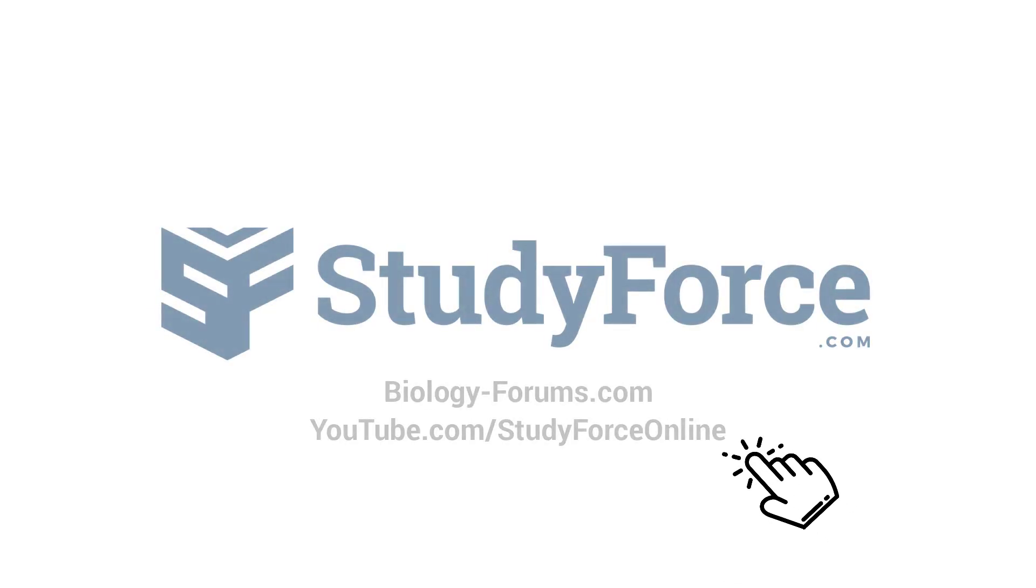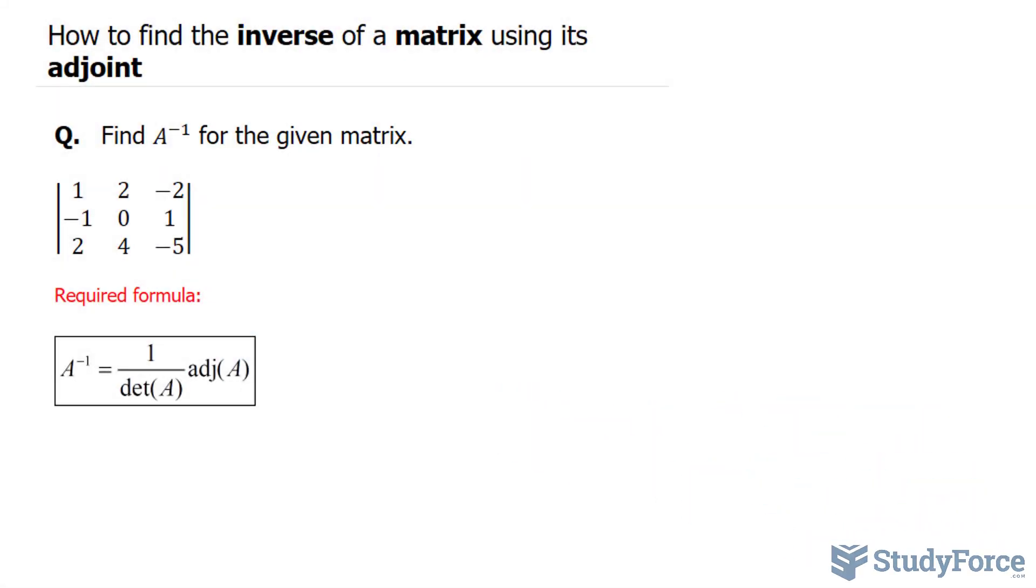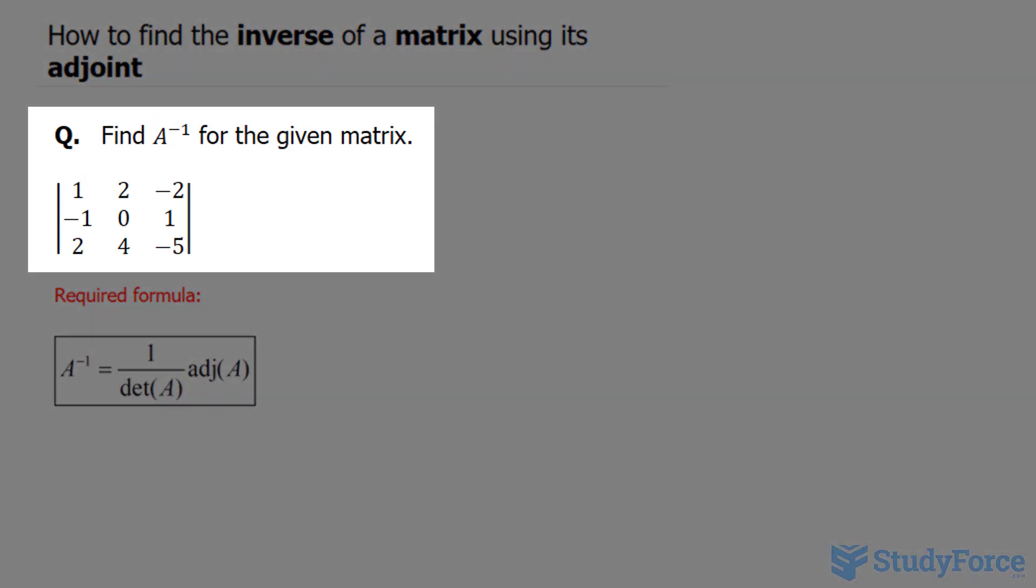In this lesson, I'll show you an example on how to find the inverse of a matrix using its adjoint. The question reads, find the inverse of A for the given matrix. So this matrix here is A.